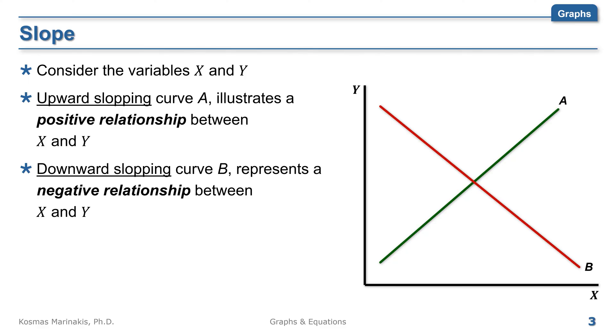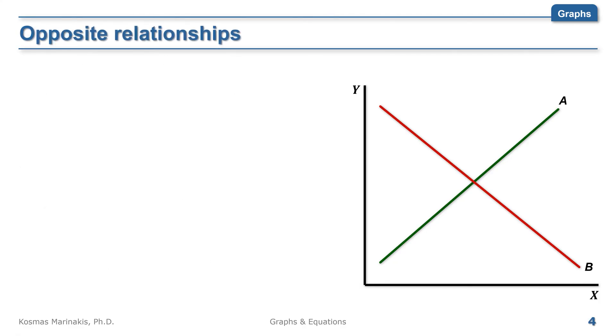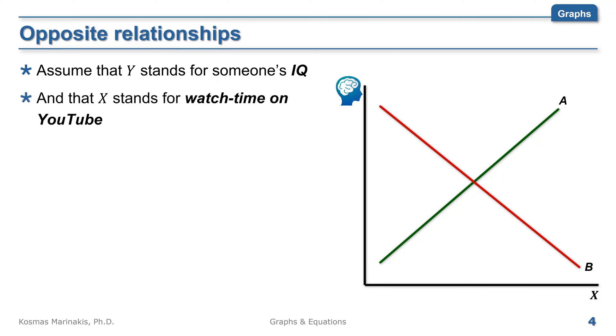But wait, how can we have two opposite relationships between the same two variables? In order to explain this, let's assume that our variables stand for something specific. Assume that y stands for somebody's intelligence, say in units of IQ. And x stands for how long this person watches YouTube per day, say in minutes.